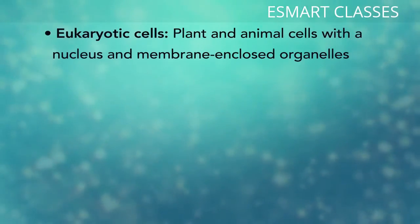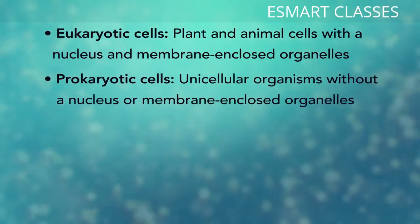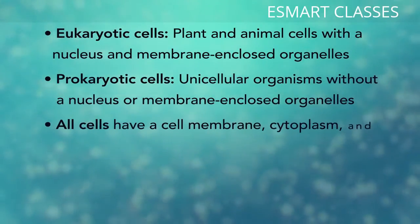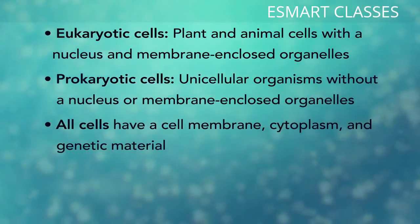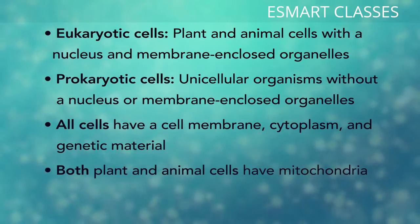In summary, remember, eukaryotic cells are plant and animal cells with a nucleus and membrane-enclosed organelles, while prokaryotic cells are unicellular organisms without these things. All cells have a cell membrane, cytoplasm, and genetic material. And even though only plant cells have chloroplasts, both plant and animal cells have mitochondria.